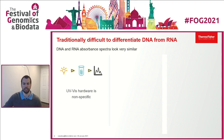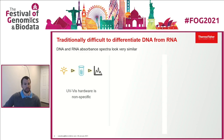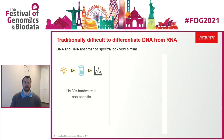Traditionally, it's been very difficult to differentiate DNA from RNA in a typical UV-Vis measurement. That's because the absorbance spectra of DNA and RNA look very similar, almost identical. So if we think about the problem that we're facing, let's start out by reminding ourselves how a UV-Vis absorbance measurement is made.